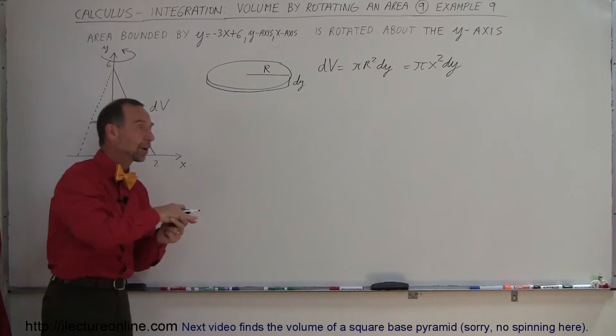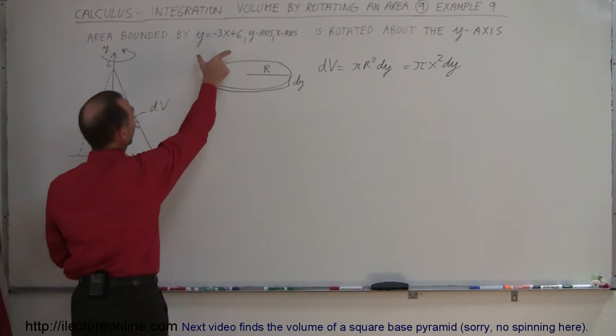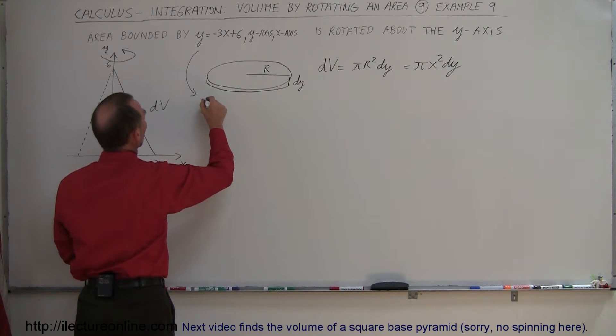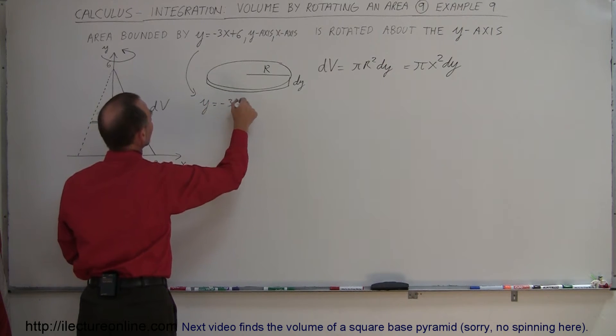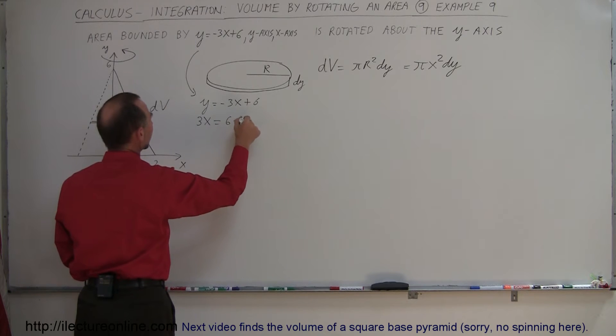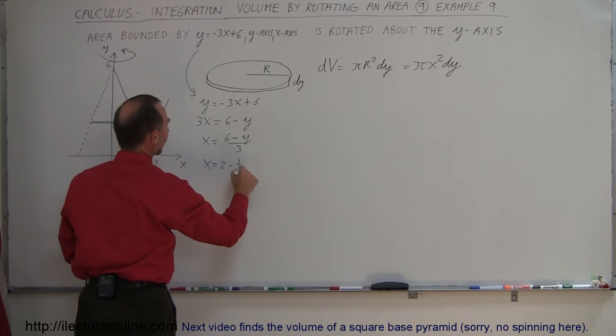We still have one more problem. We have an x squared, and when it's dy, we cannot integrate x's and y's together like that. So now we have to express x in terms of y. Here's our equation. When we take this equation, we can say that y equals minus 3x plus 6. We put the 3x over here. That becomes a positive 3x is equal to 6 minus y, and therefore x is equal to 6 minus y divided by 3, or x is equal to 2 minus 1 third y.